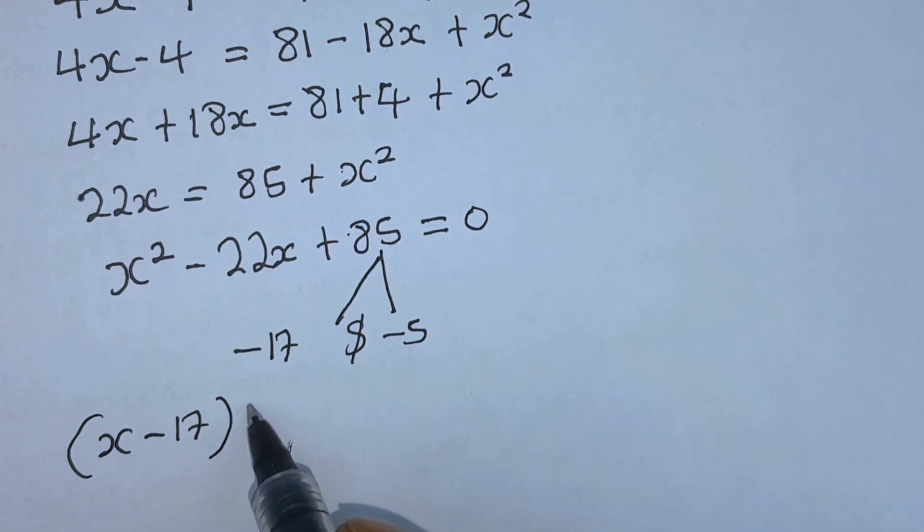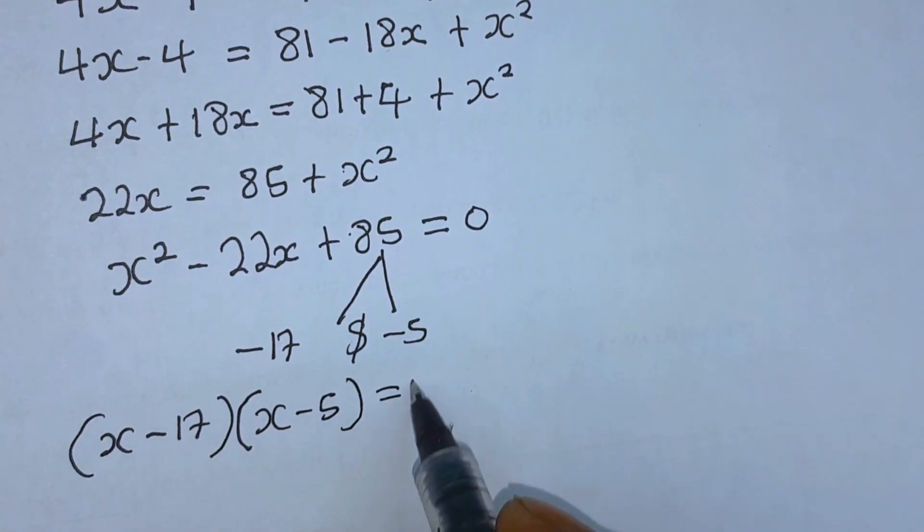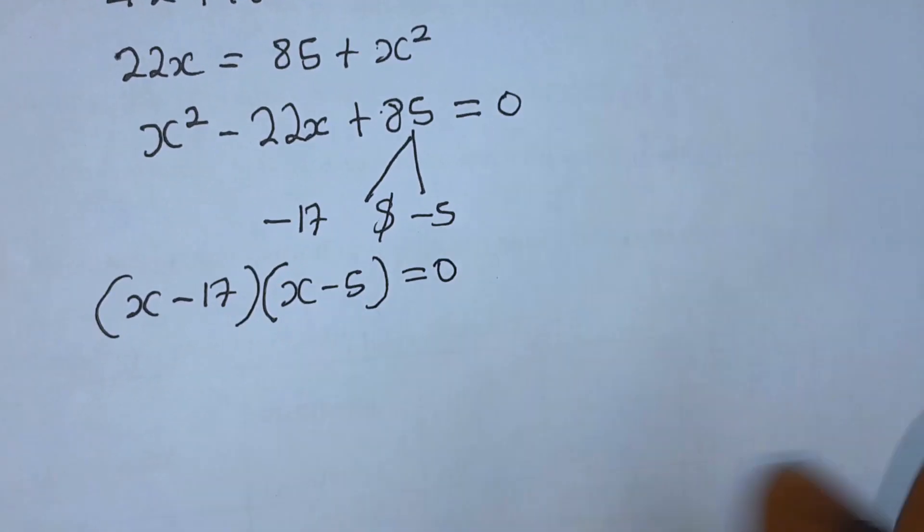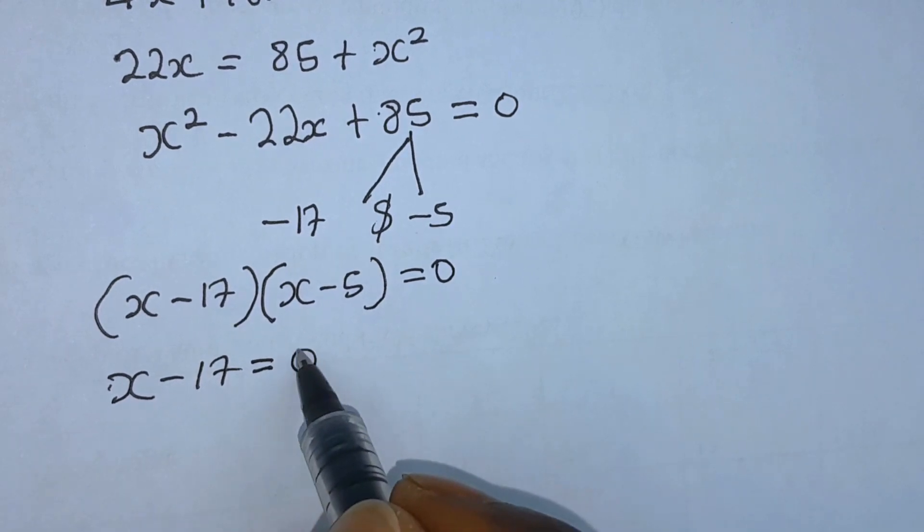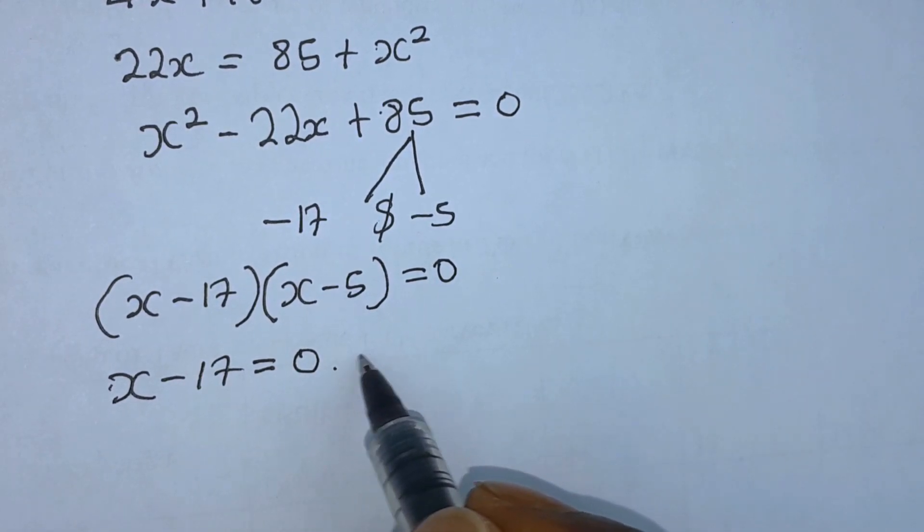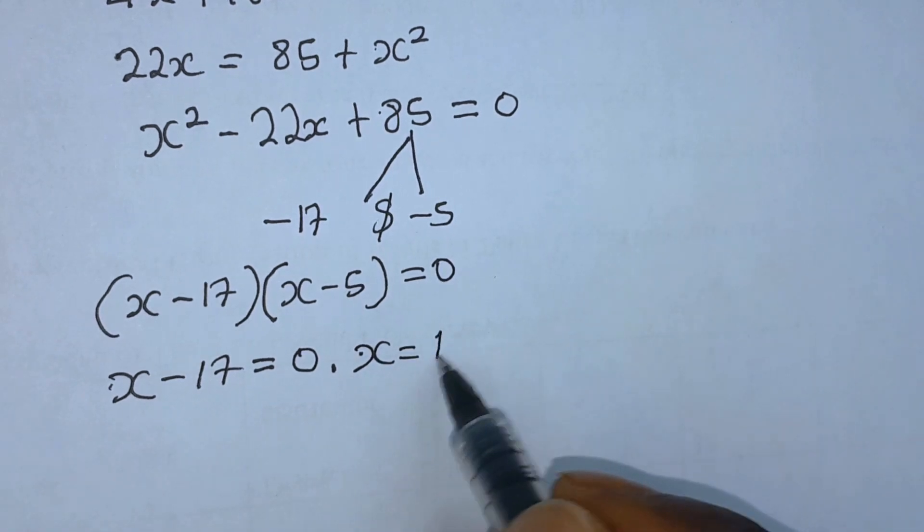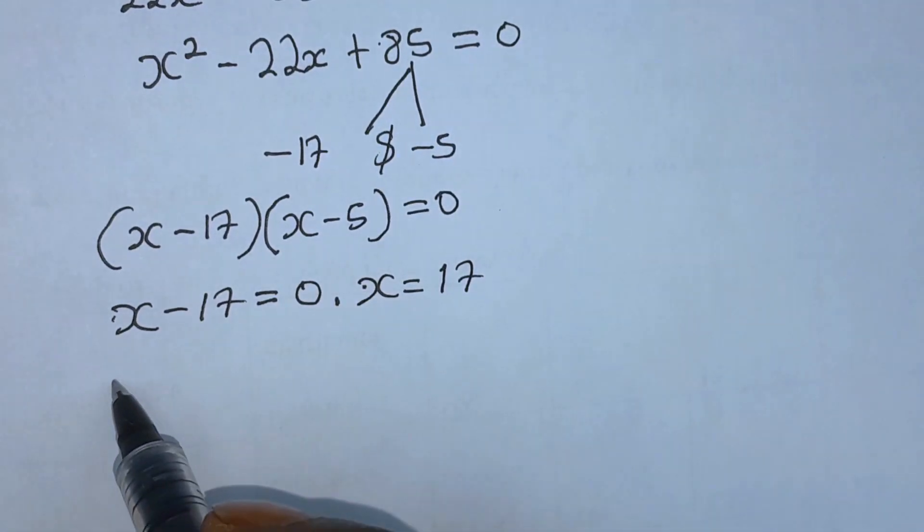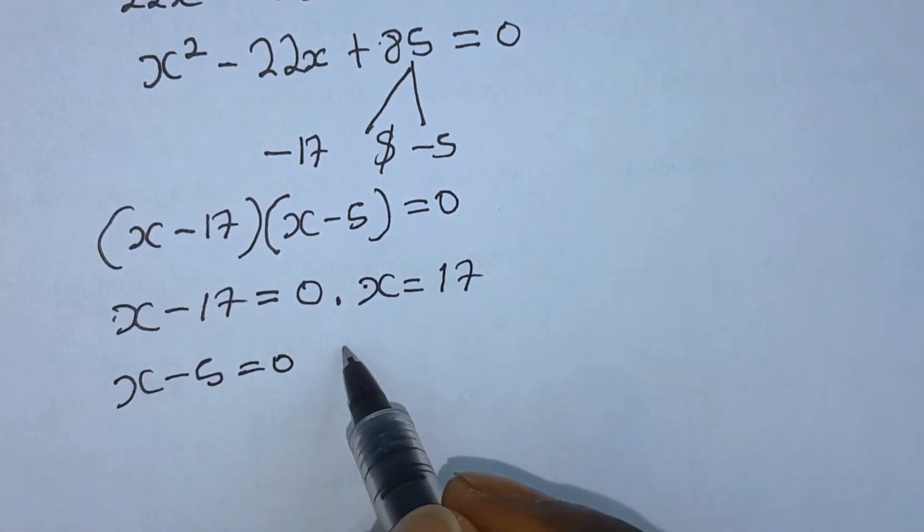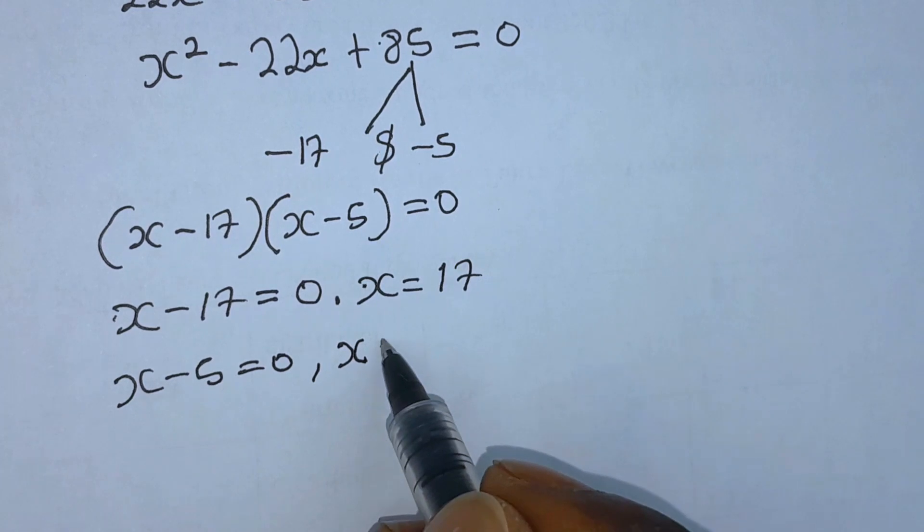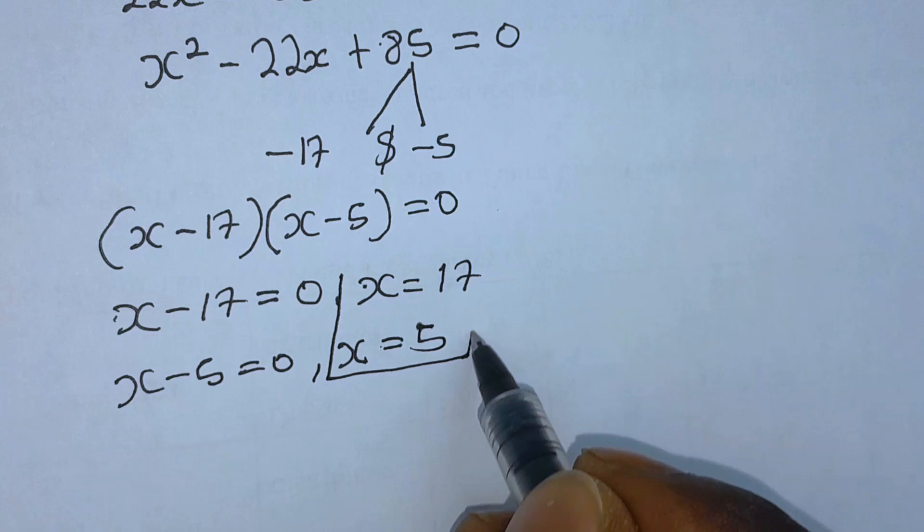Therefore, x minus 17 times x minus 5 all set equal to 0. Therefore, x minus 17 equals 0, so x equals 17. And x minus 5 equals 0, so x equals 5. These are the values of our x.